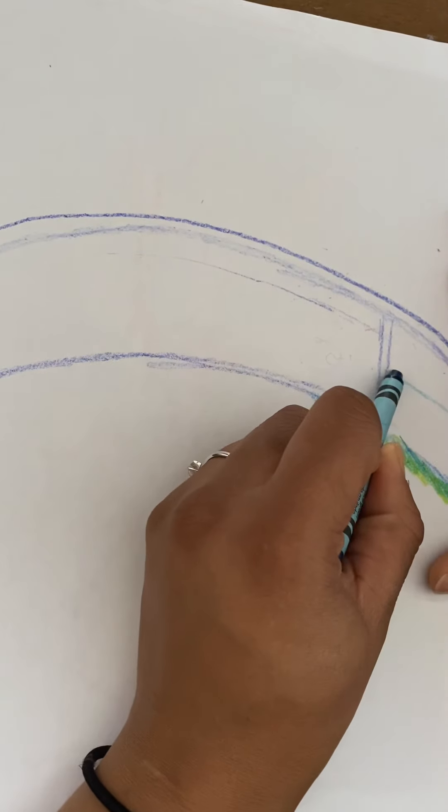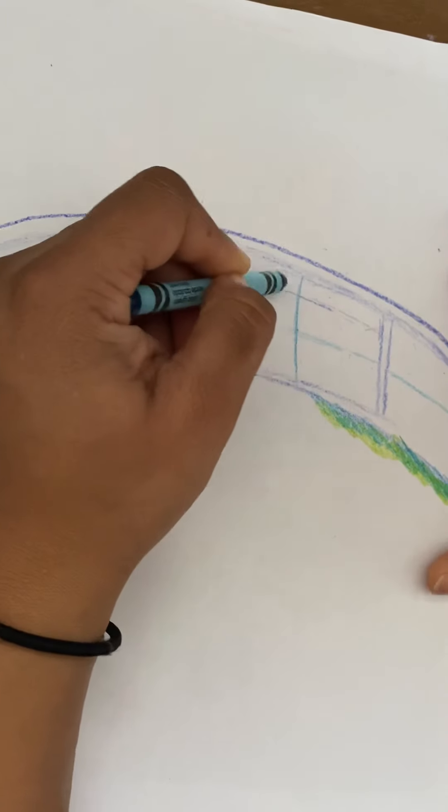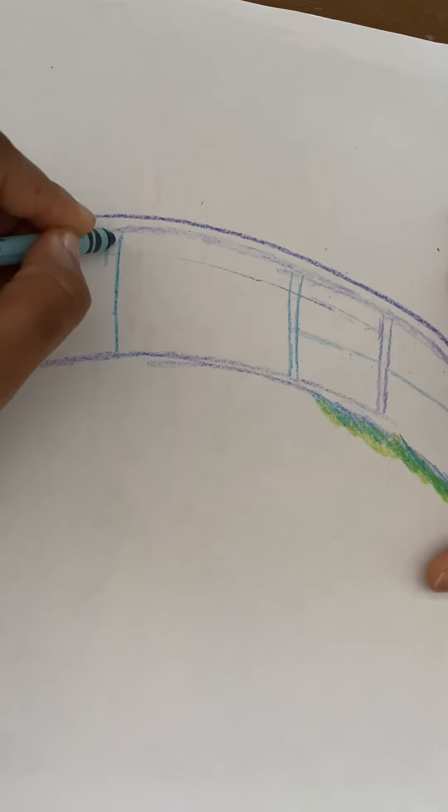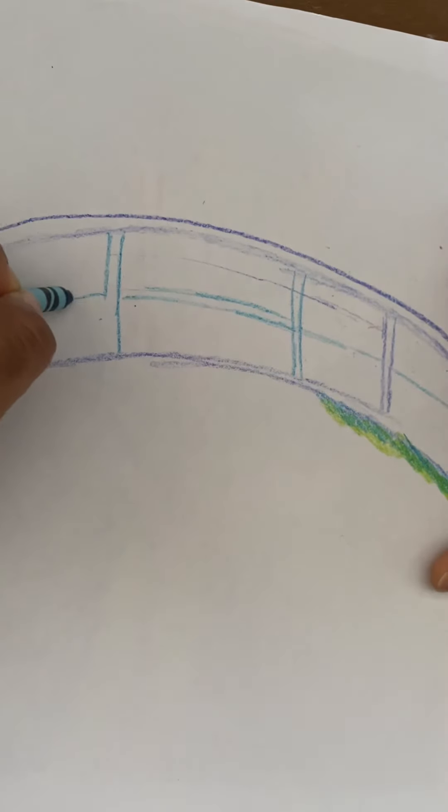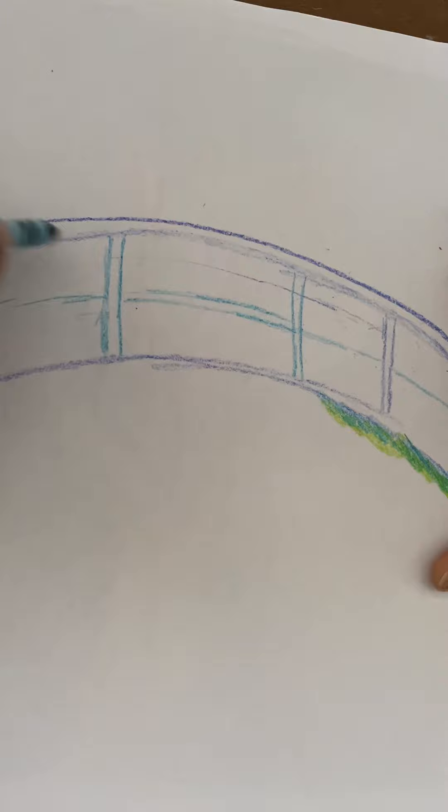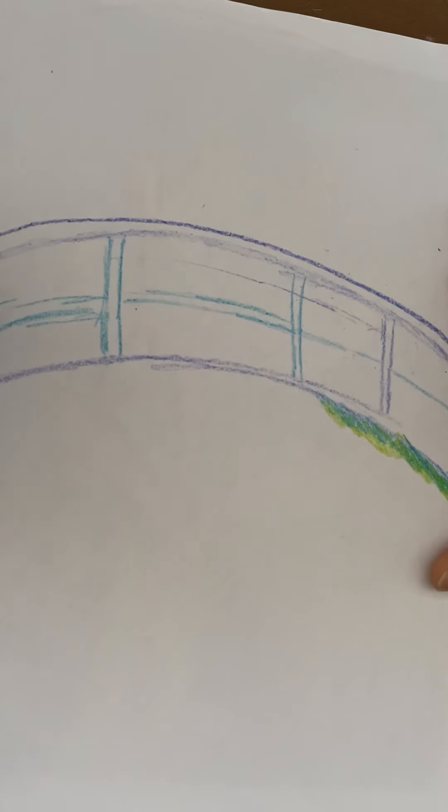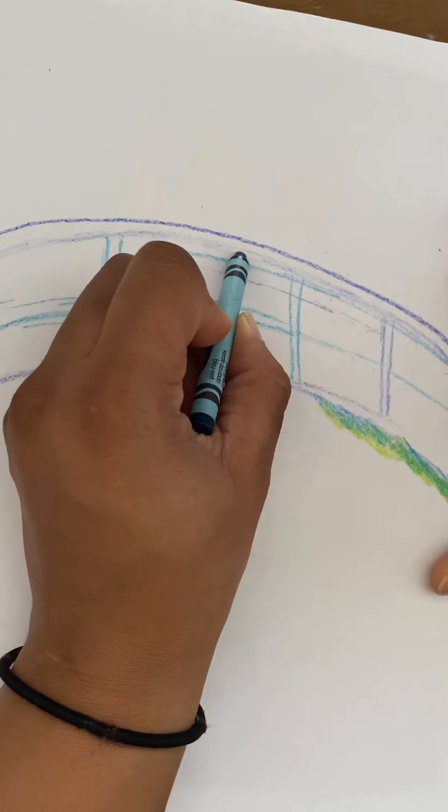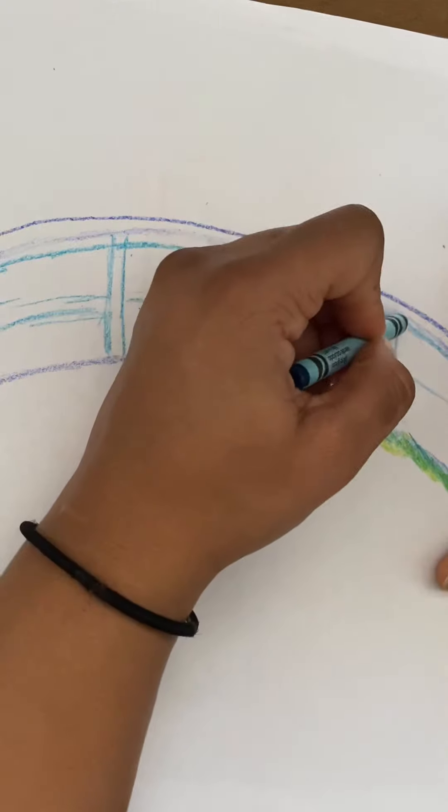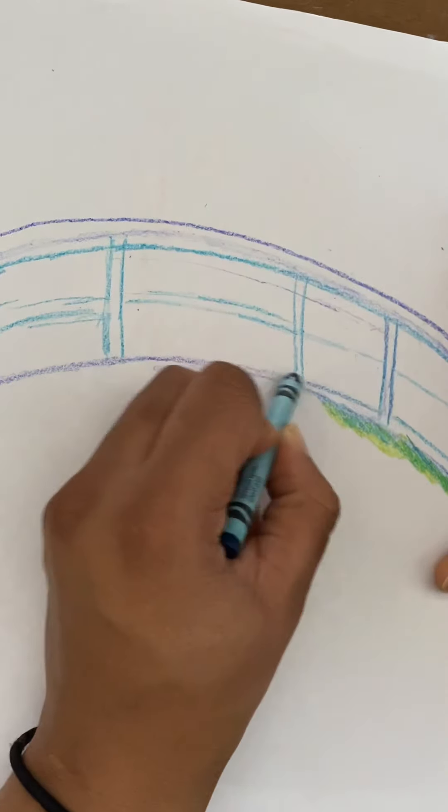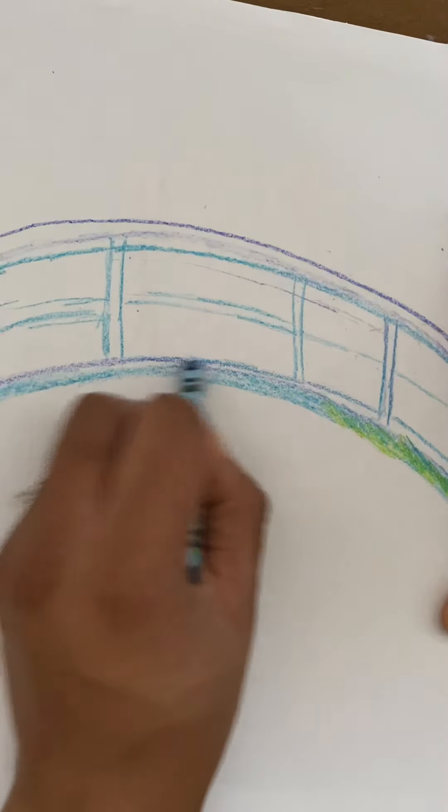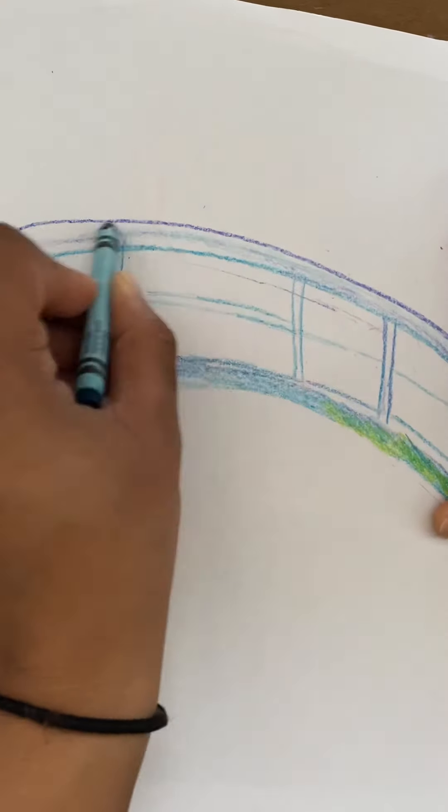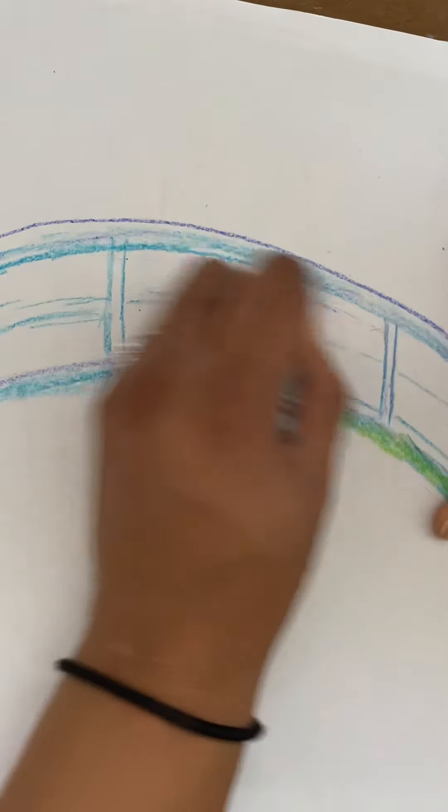He even has a railing that comes right through the middle here. And he has the railings here, here, and like so. I'm going to bring it on the bottom right over here. The top railing is done.